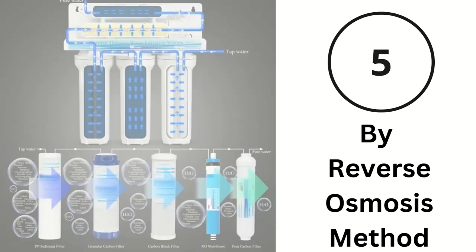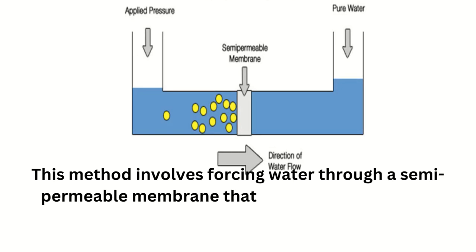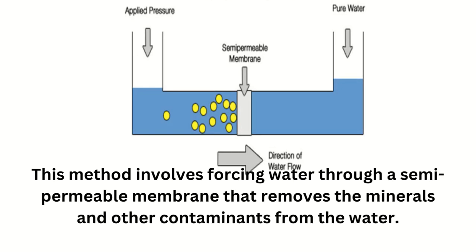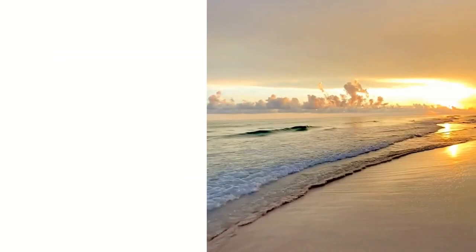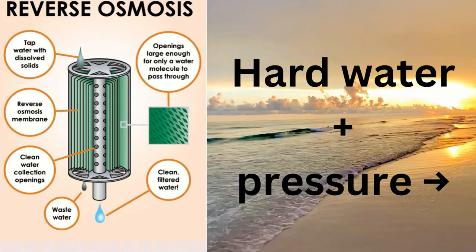Method 5: By reverse osmosis. This method involves forcing water through a semi-permeable membrane that removes the minerals and other contaminants from the water. Hard water is passed through the semi-permeable membrane by pressure and becomes soft water.